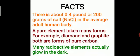A pure element takes many forms. For example, diamond and graphite are the pure forms of carbon. When carbon is under pressure and temperature for a longer period of time, it forms graphite first, and then goes on to the formation of diamond. So we call them allotropes of carbon. Lastly, many radioactive elements actually glow in the dark — for example, radium, plutonium, and uranium.